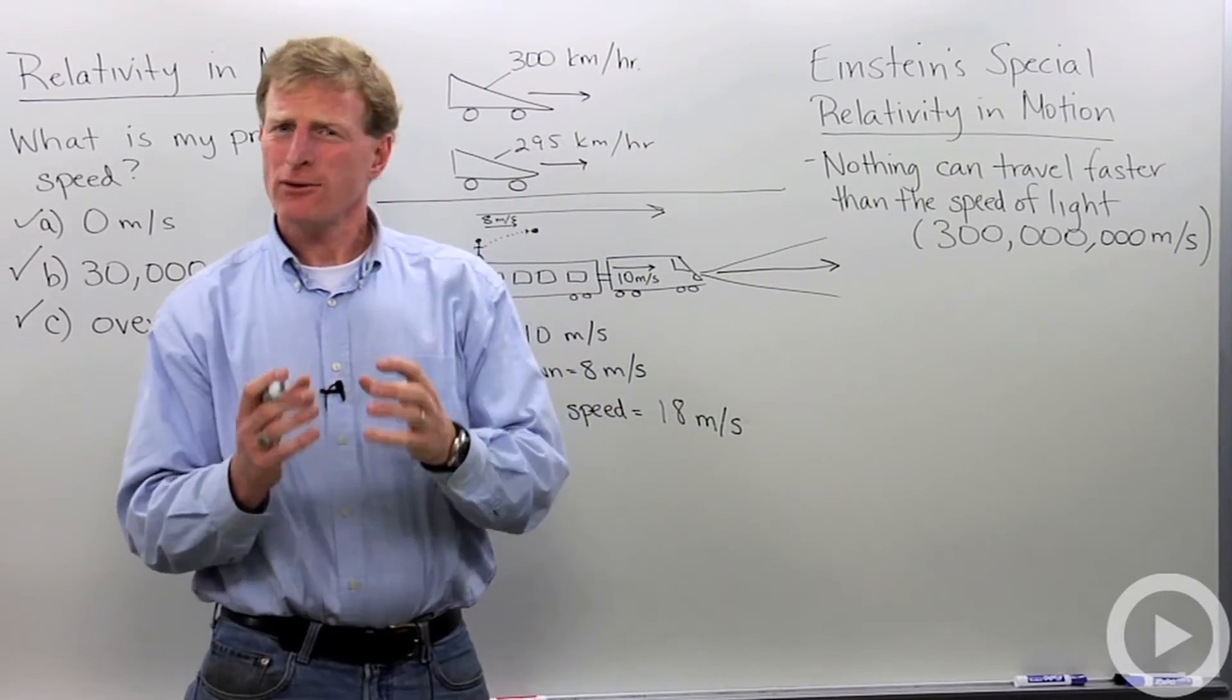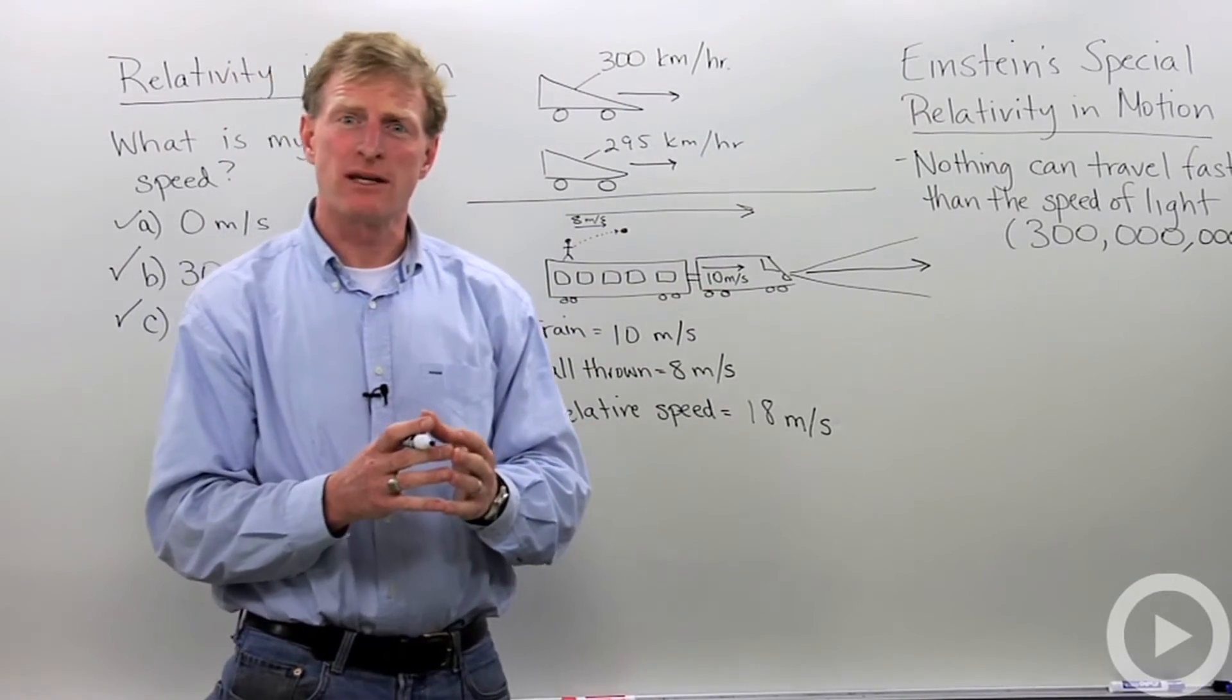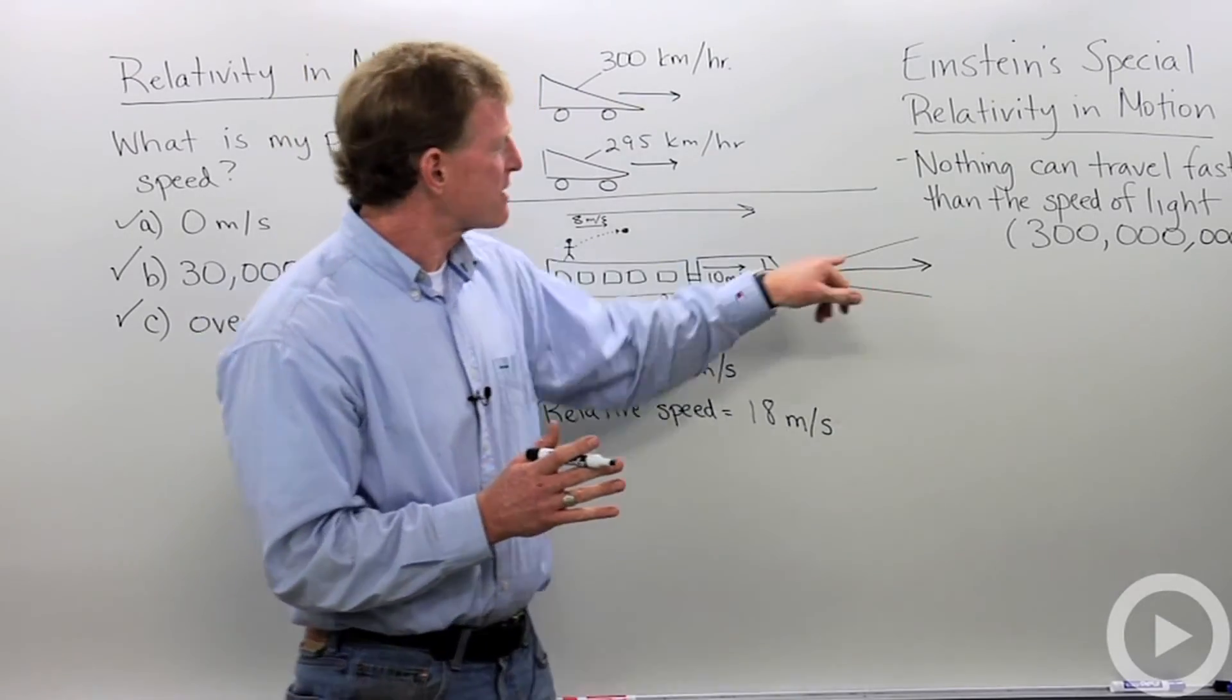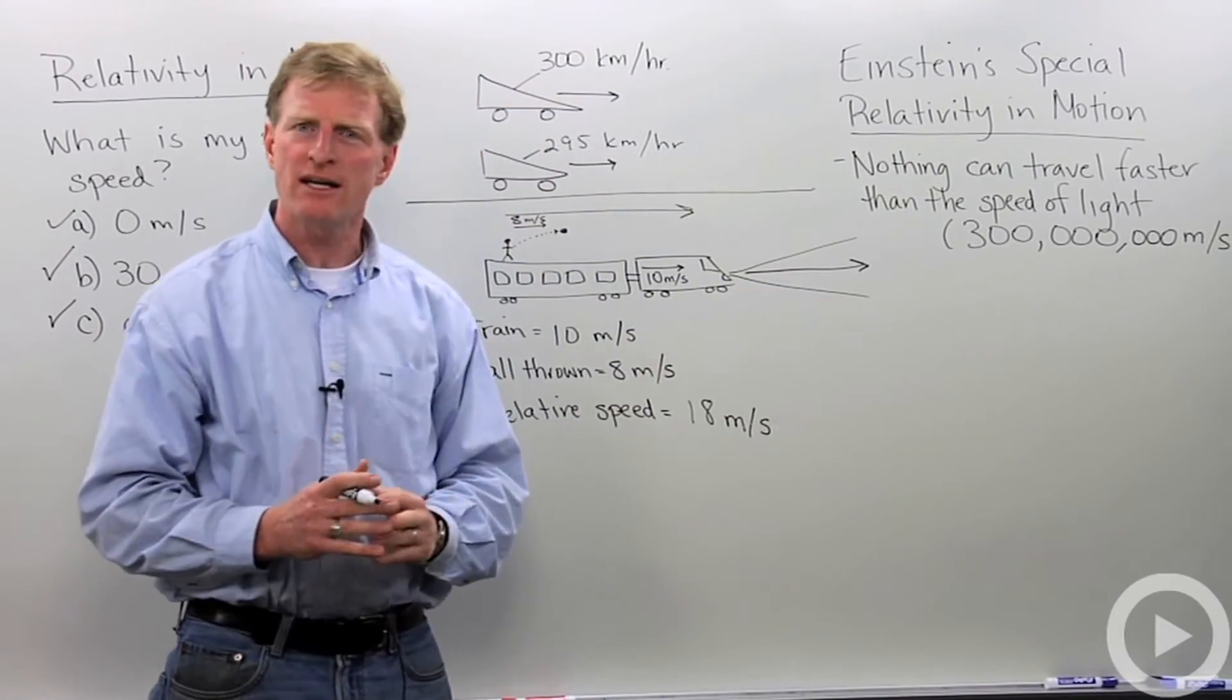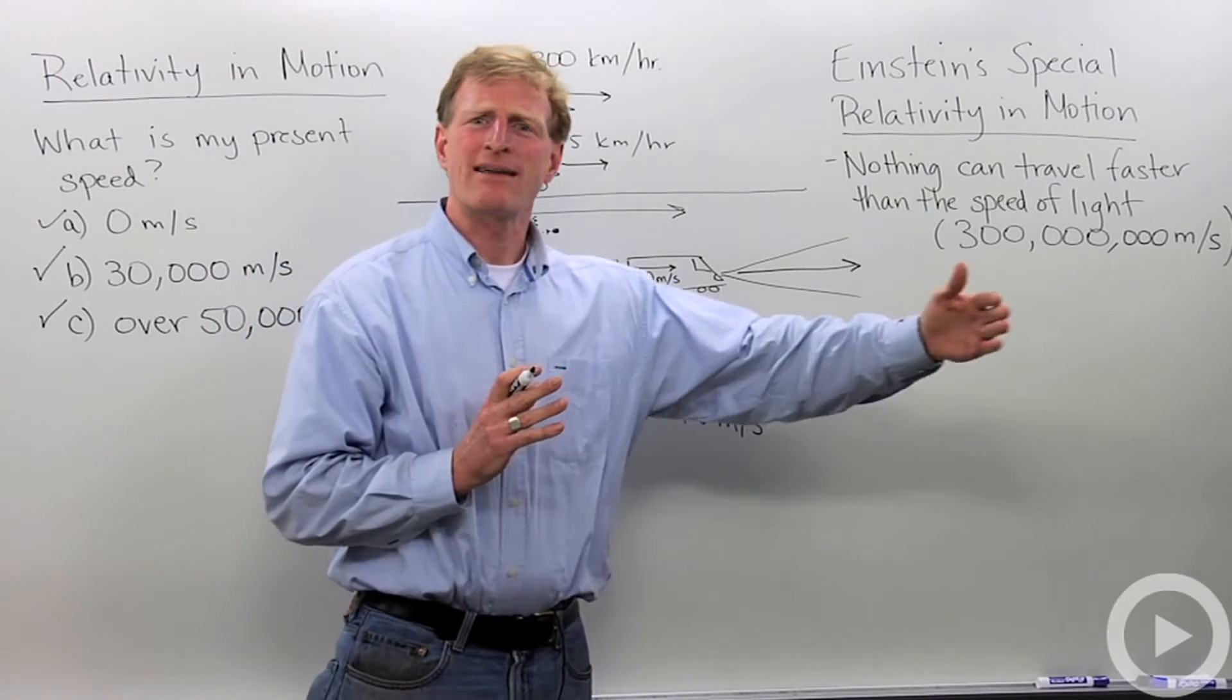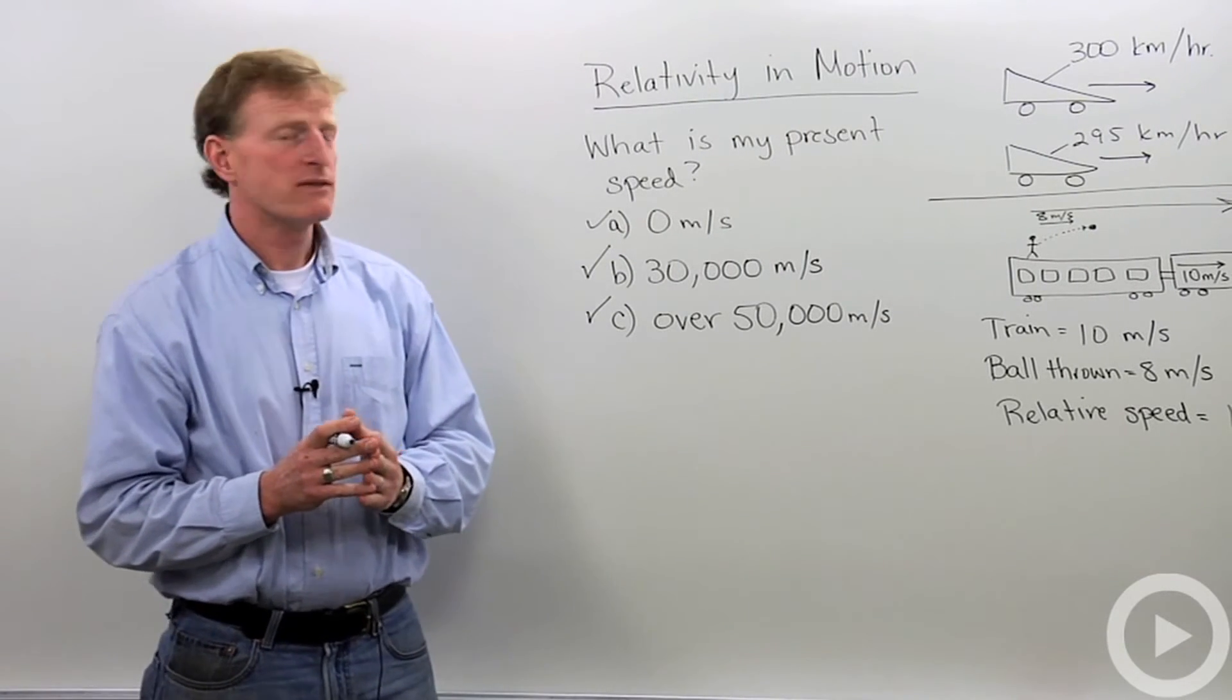Unfortunately, it doesn't work that way. Einstein discovered in what we call Einstein's special relativity in motion that nothing can go faster than the speed of light. So that light coming out of the front of the train, no matter how fast that train is going, if it's going half the speed of light or if it's going 200 kilometers an hour, that light is traveling at the same speed. So these are the ways we work with relativity in motion.